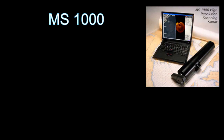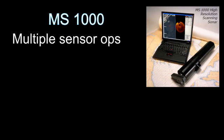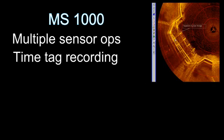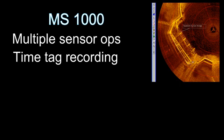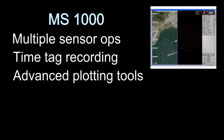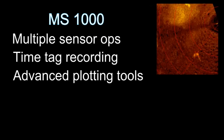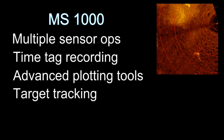The MS-1000 key features include simultaneous multiple scanning sonar head and altimeter operation and sensor configuration, time tag recording of all sonar and sensor inputs to the PC's hard drive or external recording device, advanced target measurement and annotation tools, track plotter module allowing the user to pre-plot search and survey lines and to geo-reference sonar targets, networking capability, and optional target tracking.